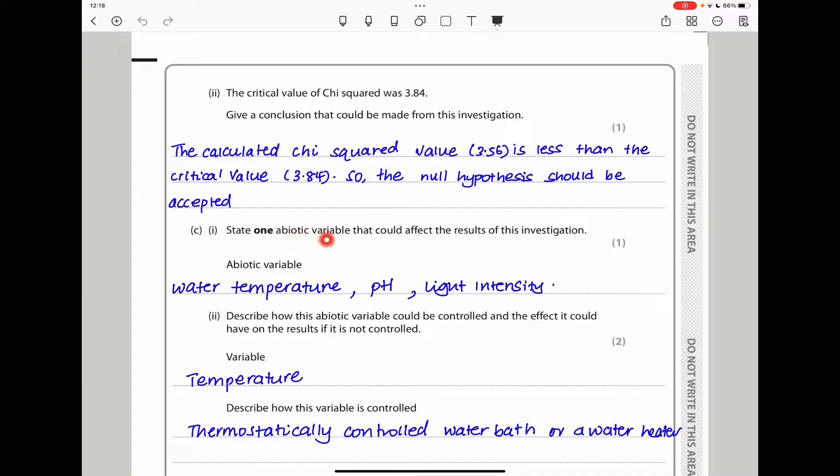State one abiotic variable that could affect the results of this investigation. Abiotic is a non-living variable. So it could be water, temperature, pH, or light intensity. Whichever you choose, it was just one mark required.